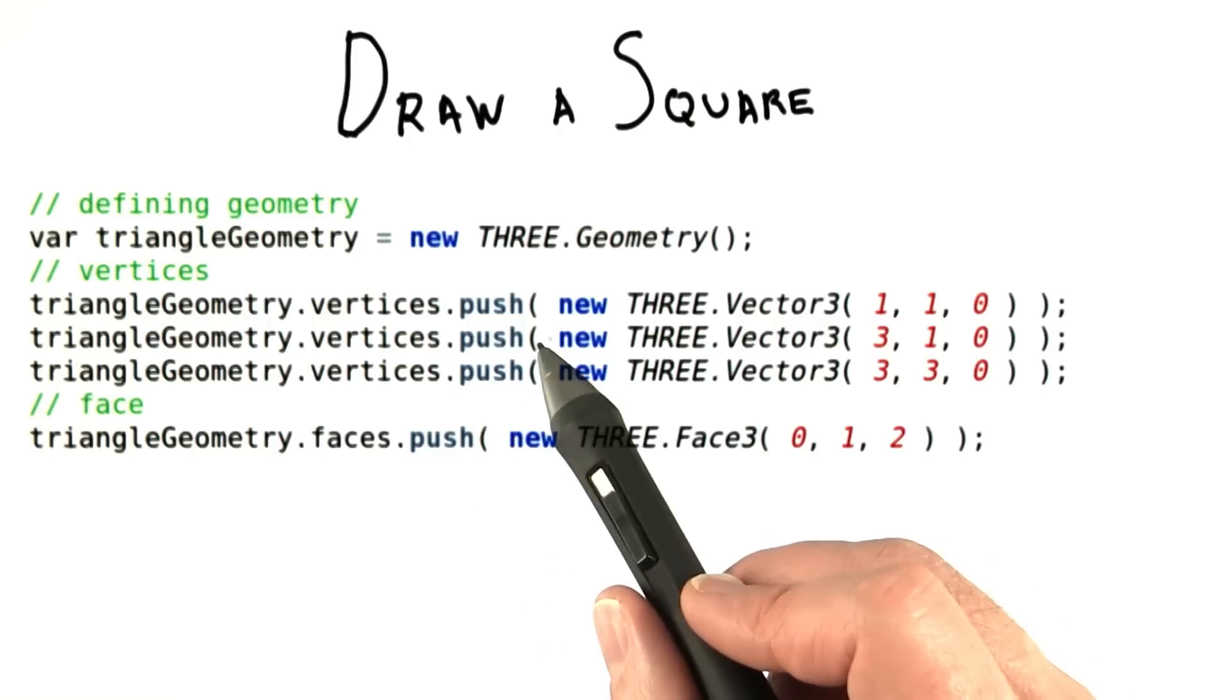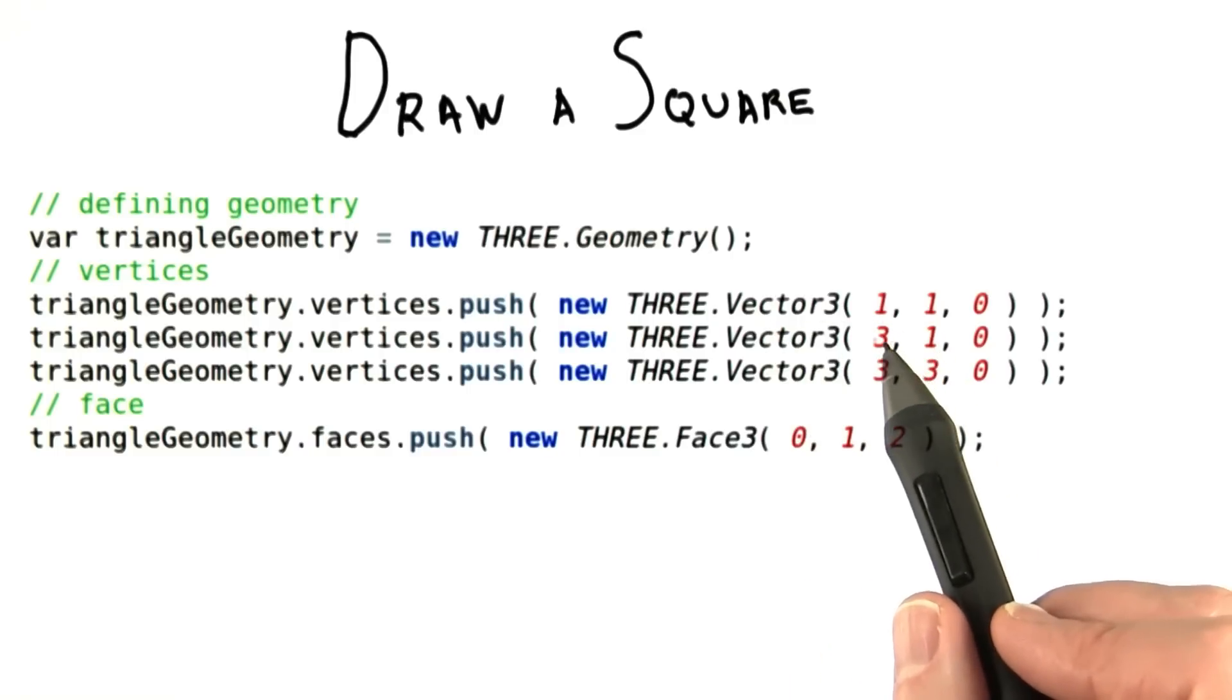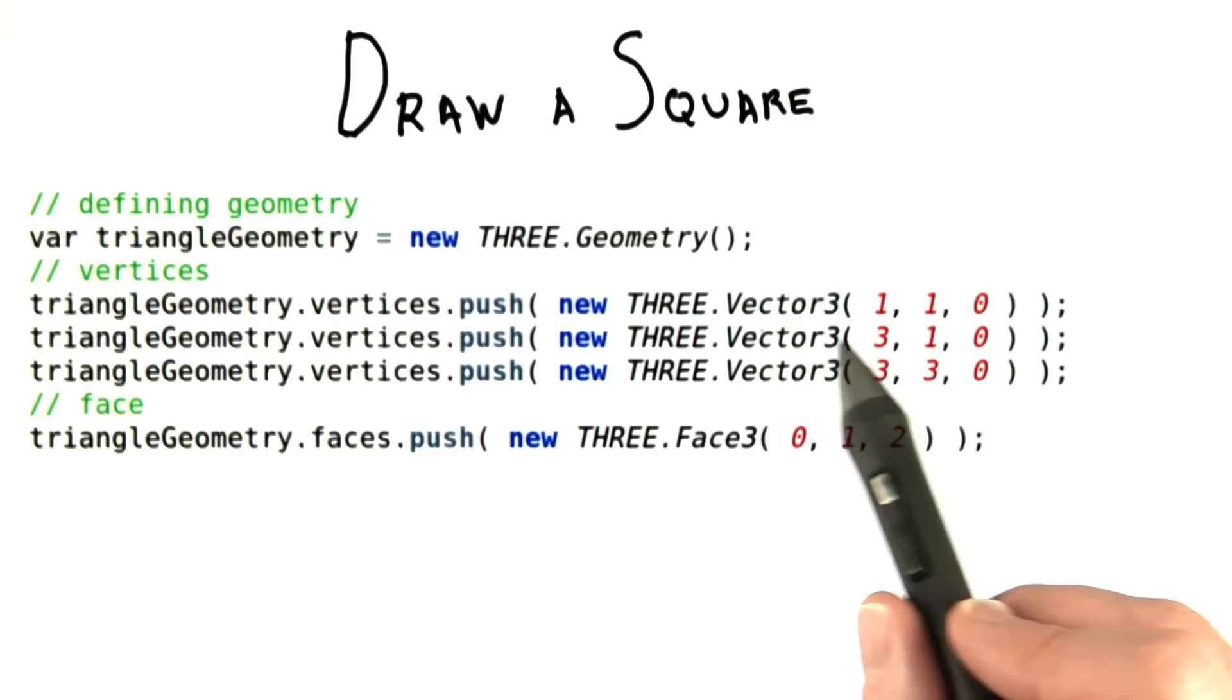Basically, push means add to the end of an array. And JavaScript keeps track of how large the array is and so on. You don't have to worry about allocating space for it. And these are our three vertices.